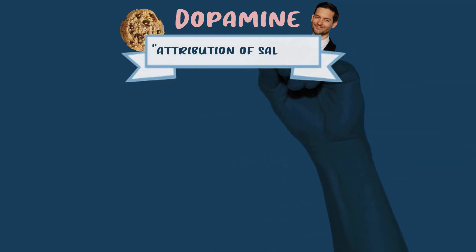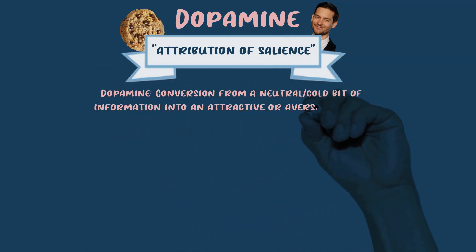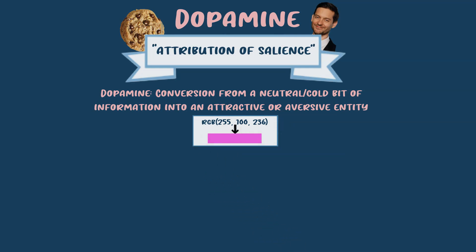Attribution of salience explains how dopamine mediates the conversion of a neural representation from a neutral, cold bit of information into an attractive or aversive entity. A good metaphor is what happens in Photoshop — you can take three numbers and Photoshop turns them into a nice pretty color, like pink. The neutral cold bit of information is the numbers — 255, 100, 236 — and the attractive entity is the color pink that sticks out. Think of the numbers as pre-dopamine and the color as post-dopamine.